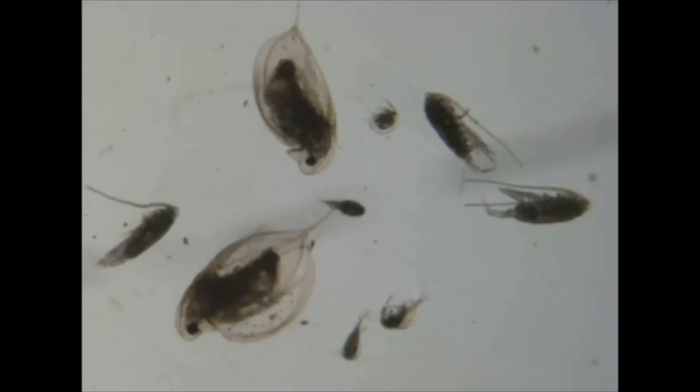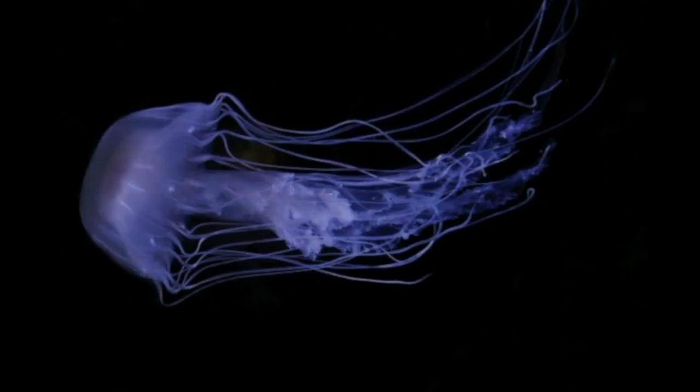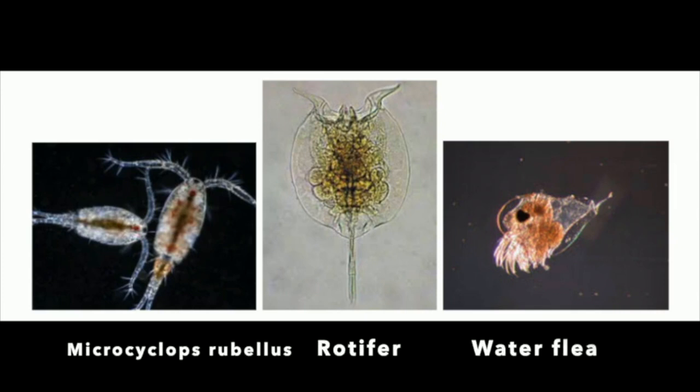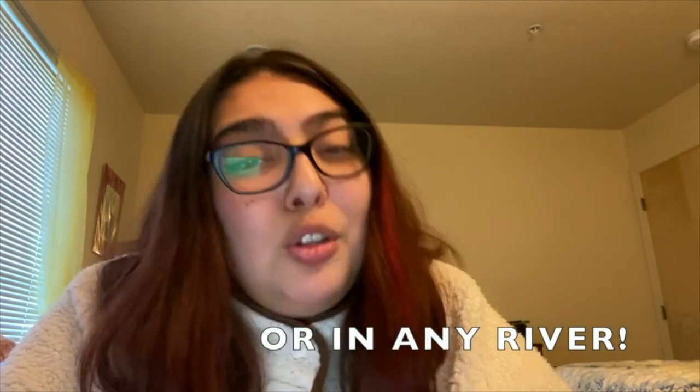Zooplankton are another type of plankton that range from tiny organisms that you can only see under a microscope to organisms like jellyfish. So here are three images shown of zooplankton found in the Klamath River. Zooplankton are very important critters that live within the Klamath River and they very much contribute to the food chain.